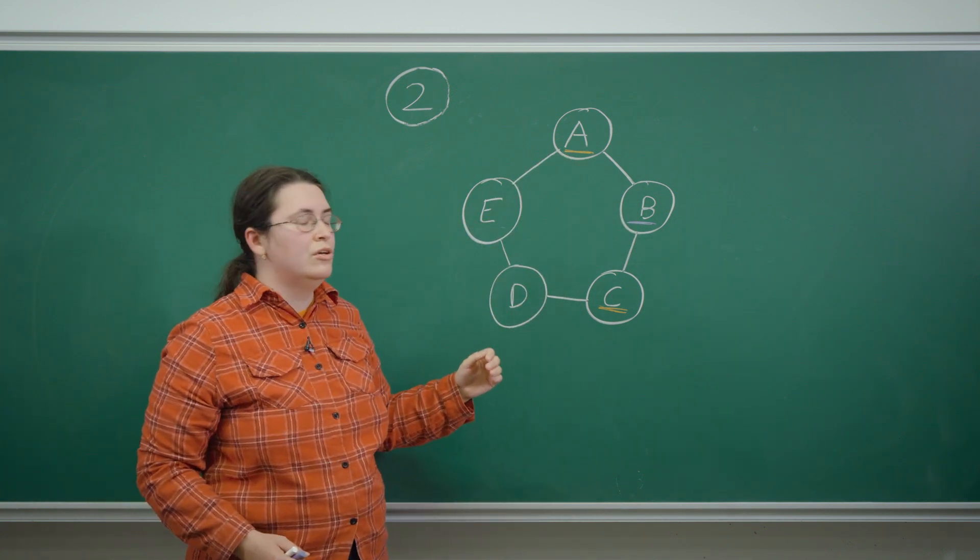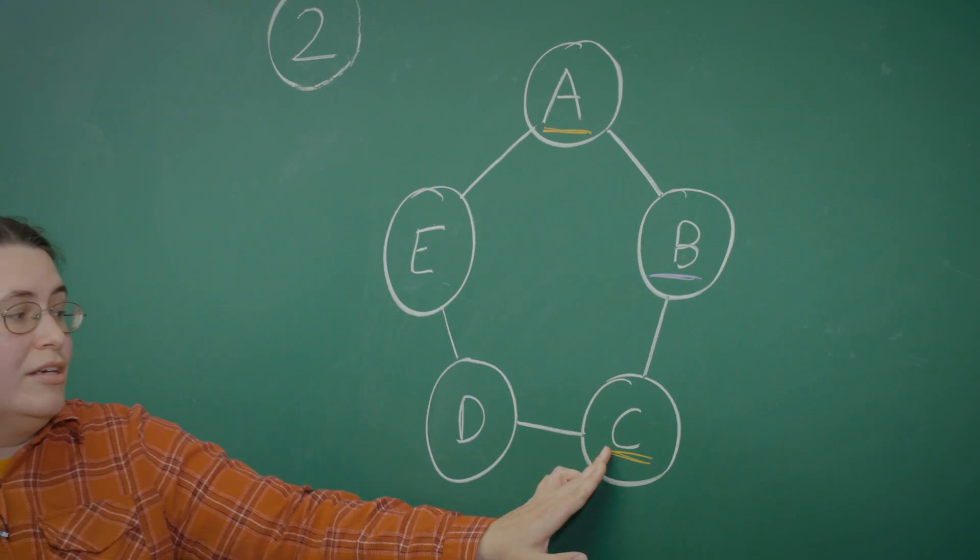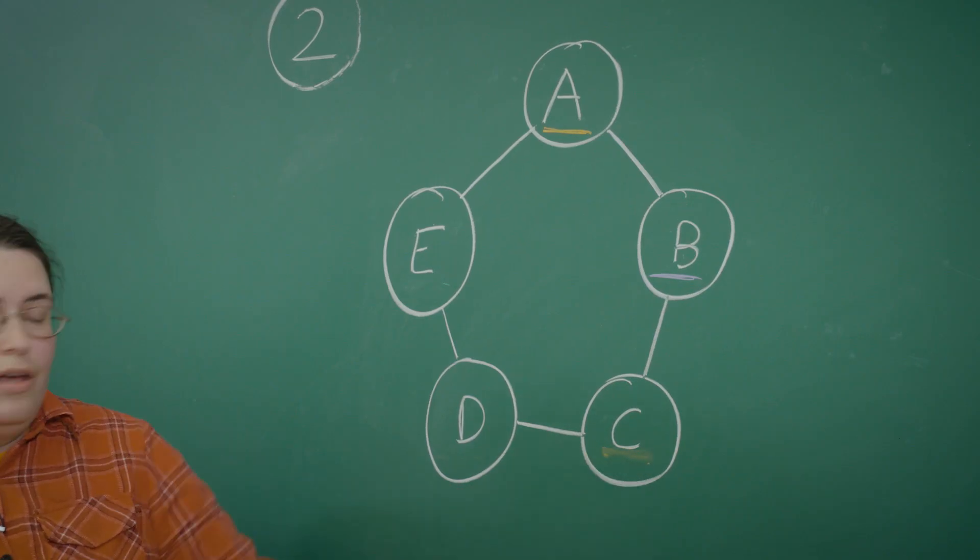The alternative I'm exploring is the world where C is colored white. In this case, D could be either purple or orange.